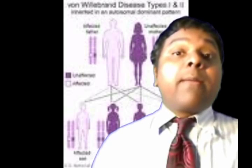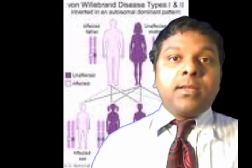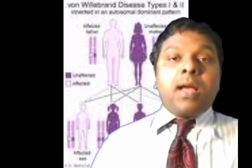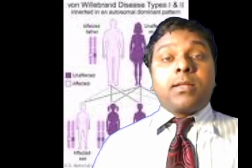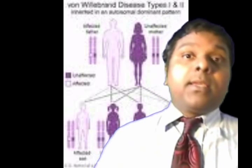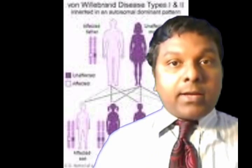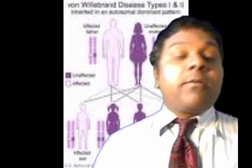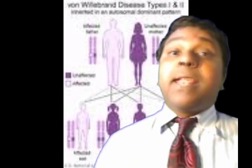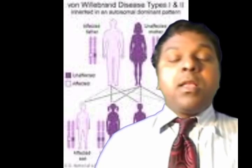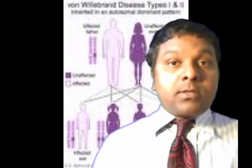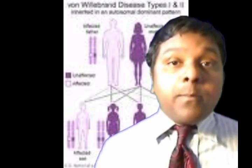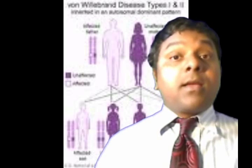There are three types. Type 1 is the most common and is a partial quantitative deficiency. Type 2 also involves a decrease in von Willebrand factor. In type 3, the deficiency of von Willebrand factor is less than 10 percent, so it is almost absent. Type 1 has near-normal levels; type 3 is almost completely absent.